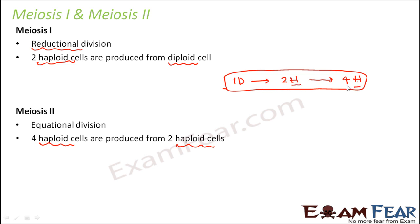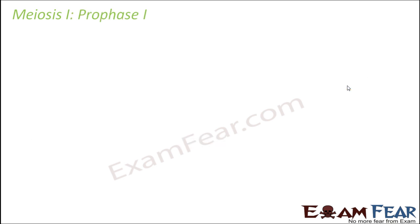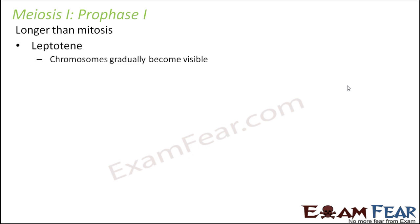Meiosis 2 will be very similar to mitosis. Now we will talk about each of the steps — first meiosis 1 and then meiosis 2. So let us talk about prophase 1 of meiosis 1. If you try to compare it with the prophase of mitosis, you will see that prophase 1 of meiosis 1 is longer than the prophase of mitosis. This prophase 1 is further divided into 5 stages because it is quite complex, and based on the behavior of the chromosomes, it is divided into these 5 phases.